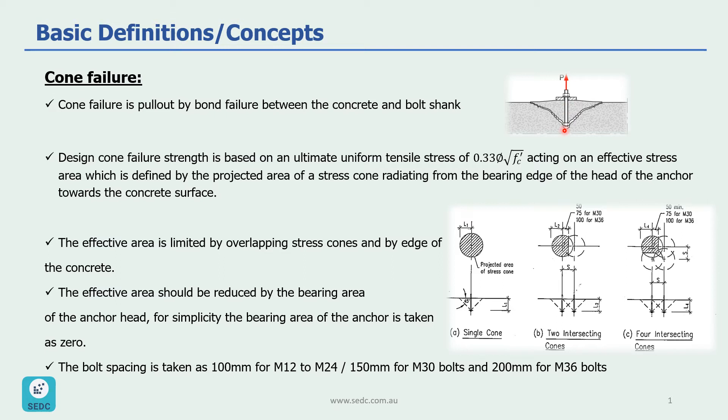Design cone failure strength is based on an ultimate uniform tensile stress of 0.335√f'c acting on an effective stress area which is defined by projected area of the stress cone radiating from the bearing edge of the head of the anchor towards the surface of the concrete.